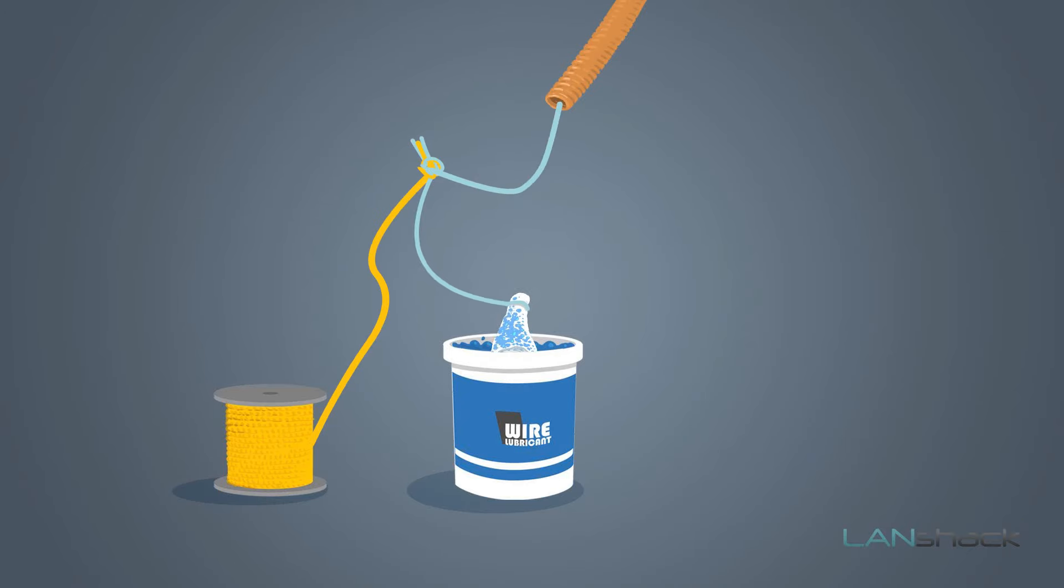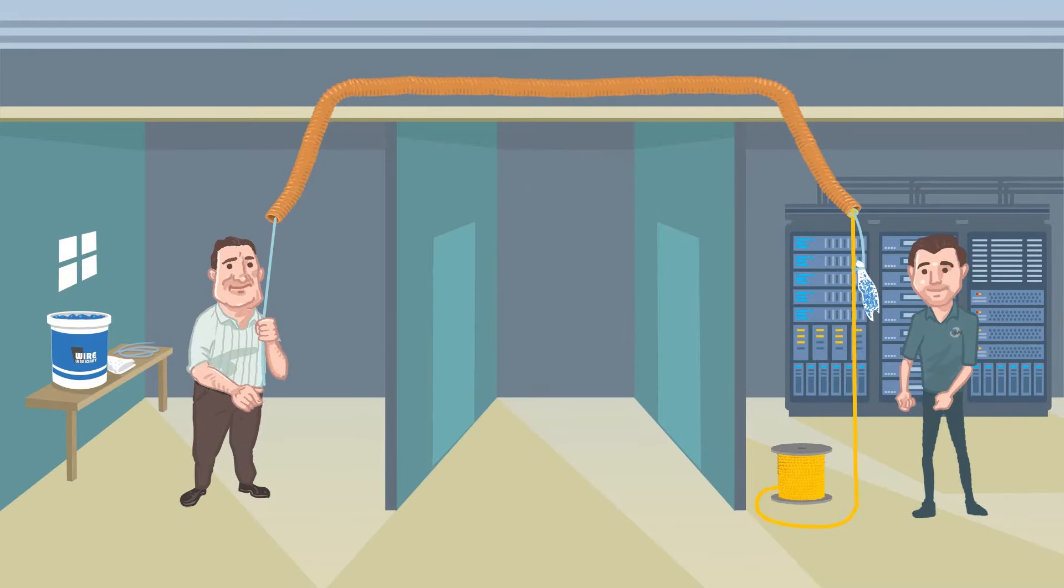Then dip the rag again in the lubricant and then just pull the string on the other side.